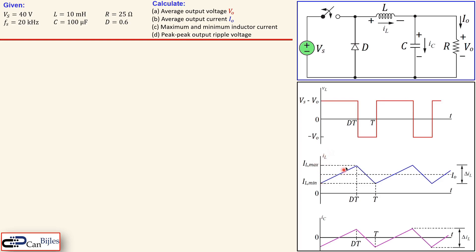The inductor current is given by this ripple configuration. You can also see that the average load current equals the average inductor current. The capacitor current will be shifted down by this average current, so it goes up and down in a similar fashion as the inductor current, but shifted down by the average load current.